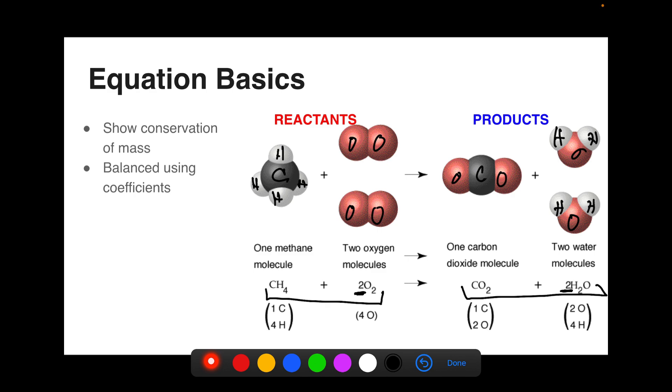It's also important to note that because this is a chemical process, bonds have been broken and formed. You see that the bonds in the reactant molecules have been broken, and new bonds in the products have formed. So even though mass is conserved, the atoms are rearranged from reactants to products.